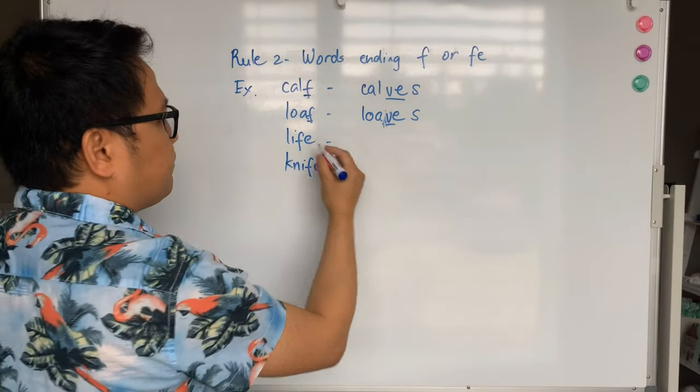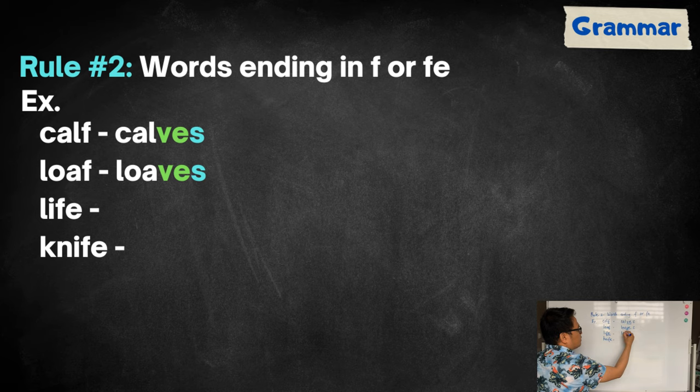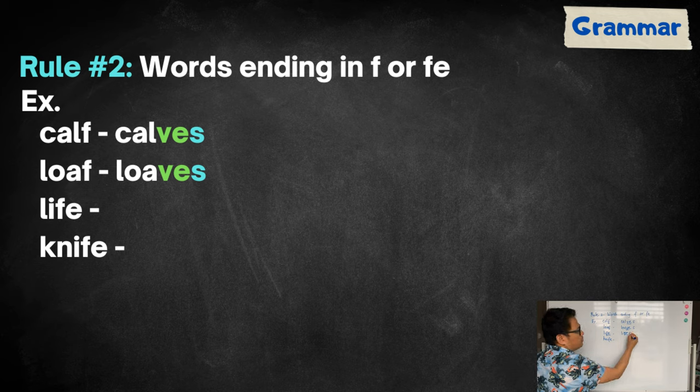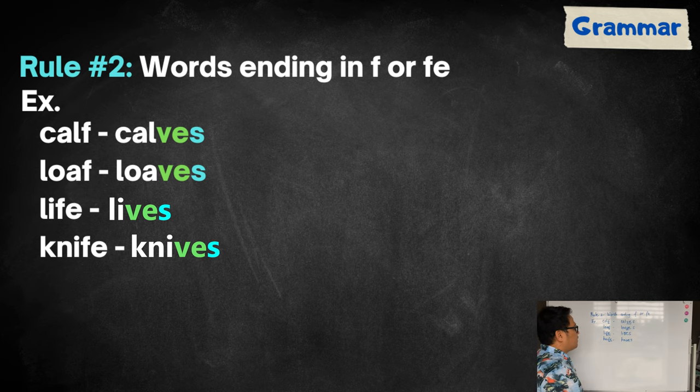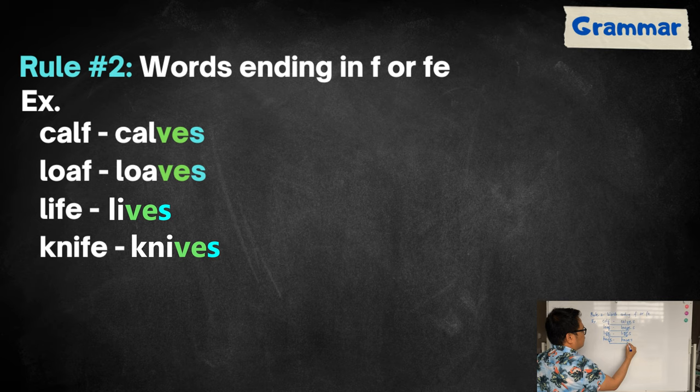While life, F-E, will become V-E and then put s, while knife, F-E, will become V-E and then put s. Life will become lives, knife will become knives. There we go. That's how you change these nouns to plural form.